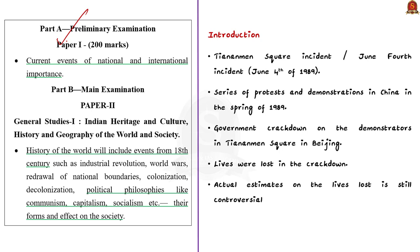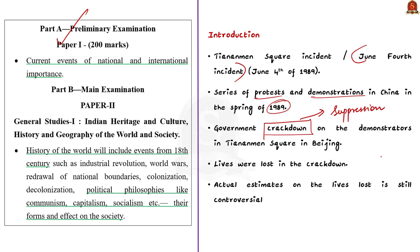The Tiananmen Square incident is also called the June 4th incident because it happened on June 4th, 1989. This incident was a series of protests and demonstrations in China in the spring of 1989, culminating on June 3rd and 4th with a government crackdown on demonstrators in Tiananmen Square in Beijing. A lot of lives were lost in the crackdown, and the actual estimates on lives lost remain controversial.